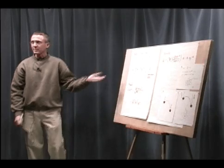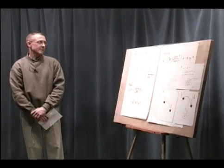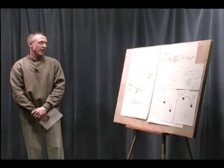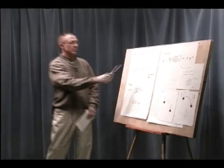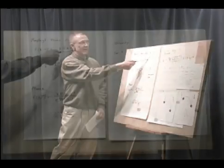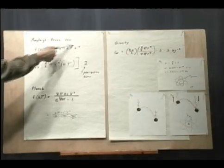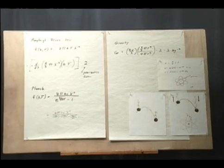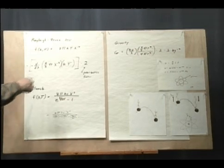Now, this led to what's called the ultraviolet catastrophe. When the wavelength got to be very small, this energy just blows up and it doesn't make any sense anymore.